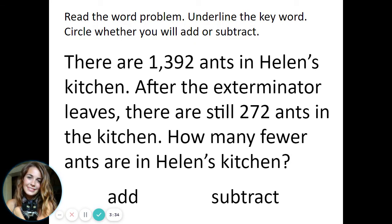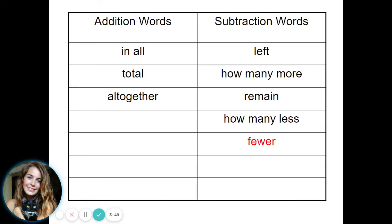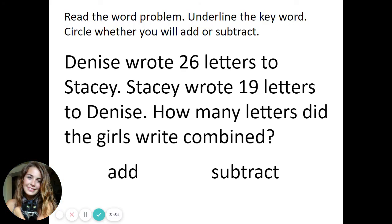There are 1,392 ants in Helen's kitchen. After the exterminator leaves there are still 272 ants in the kitchen. How many fewer ants are in Helen's kitchen? How many fewer is just like saying how many less. That's also a subtraction word.